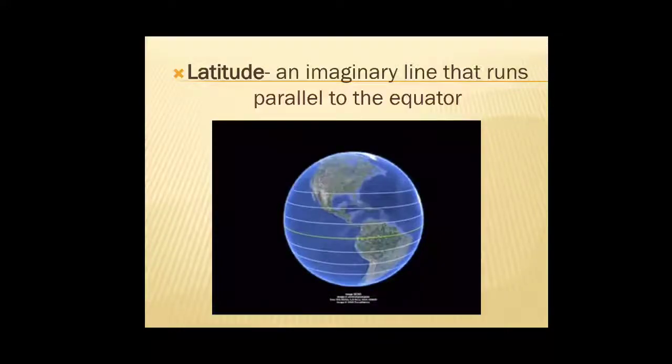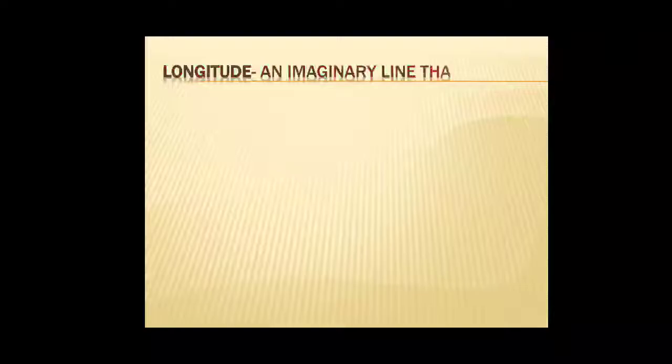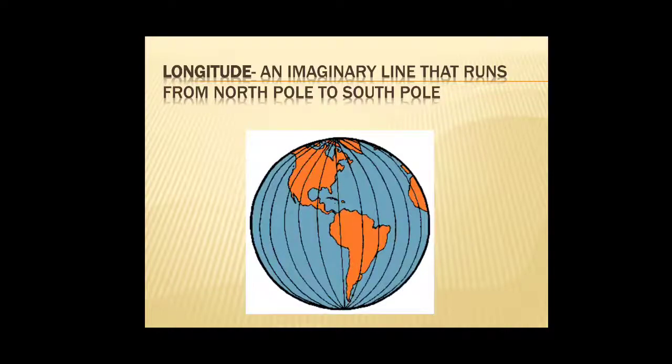The second one is longitude. It is an imaginary line that runs from north pole to south pole. This image will show you the longitude. It runs from north pole to south pole.